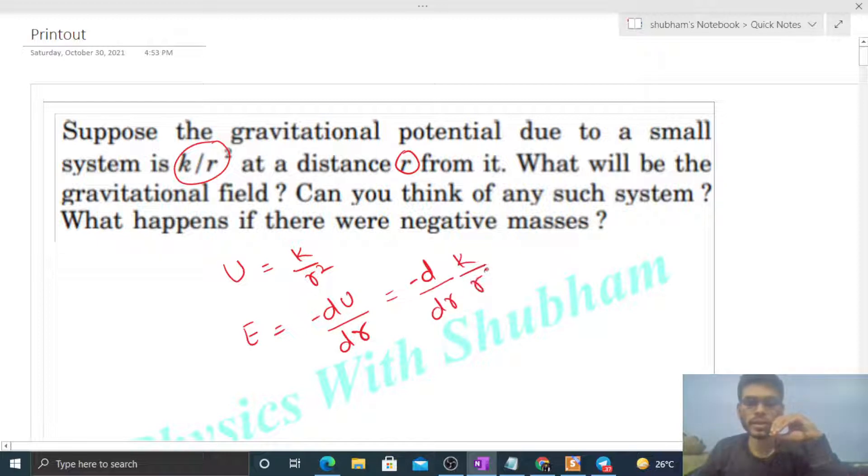So k is constant, k/r² can be written as k times r⁻². Differentiating with respect to r gives -2/r³. So it will be minus times (-2k/r³), which equals 2k/r³. This is the value of gravitational field.